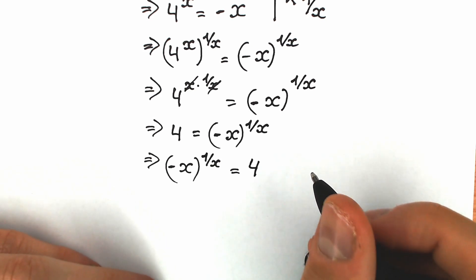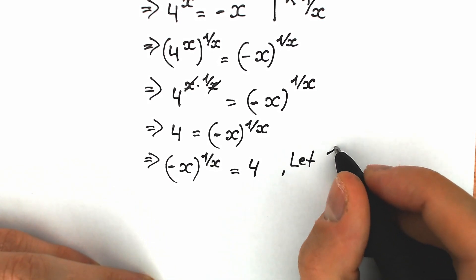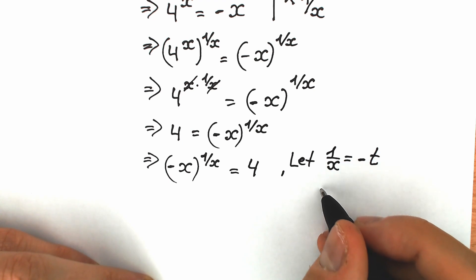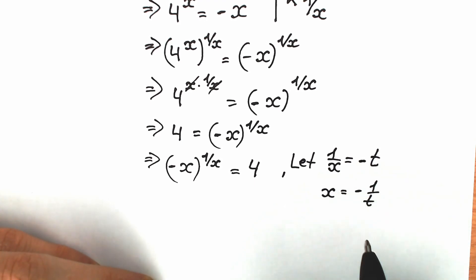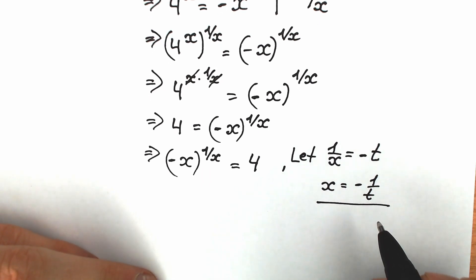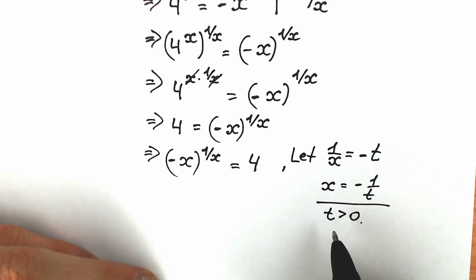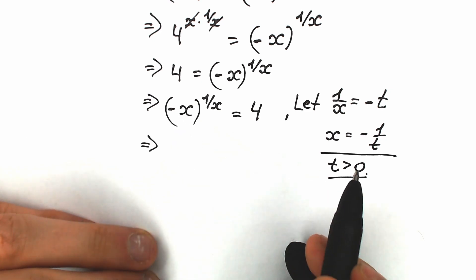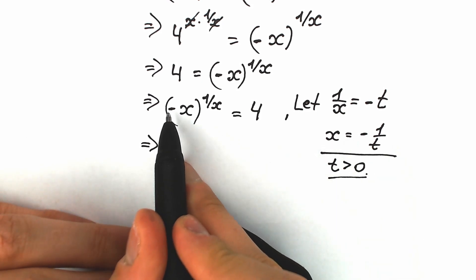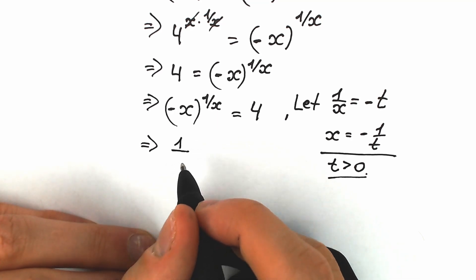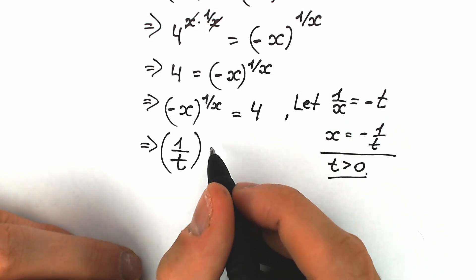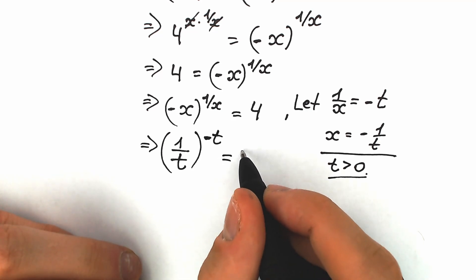Now I'll show you a great substitution. Let 1 over x equal minus t. Then x equals minus 1 over t. An important note: t needs to be positive because x is negative. Plugging into our equation, minus x becomes minus of (minus 1 over t), which is 1 over t. The exponent 1 over x becomes minus t. So we get 1 over t to the power minus t equals 4.